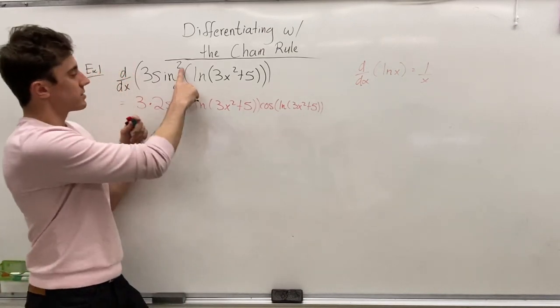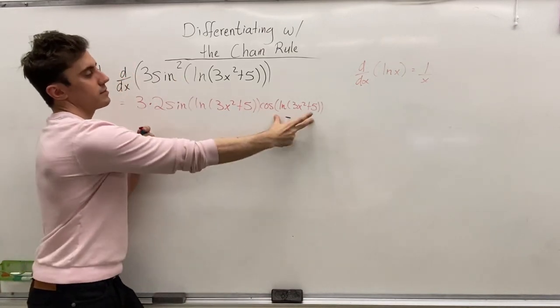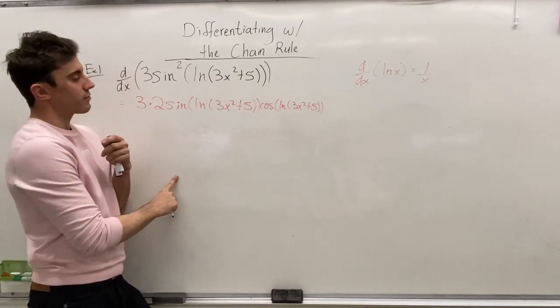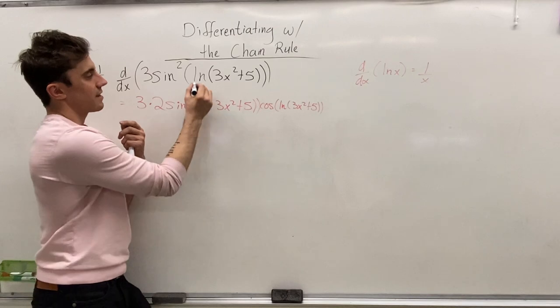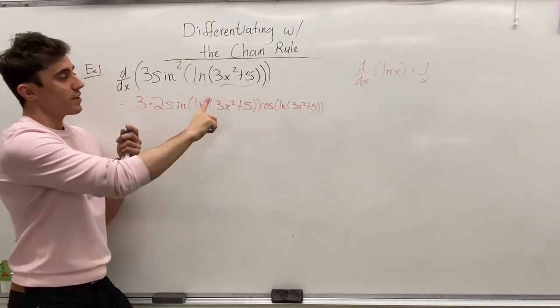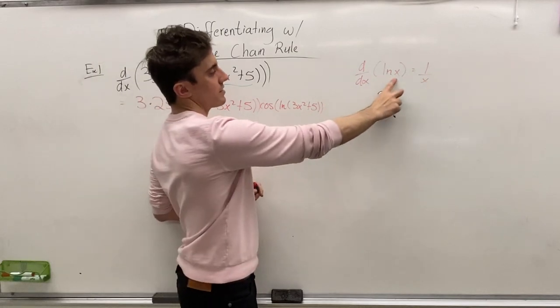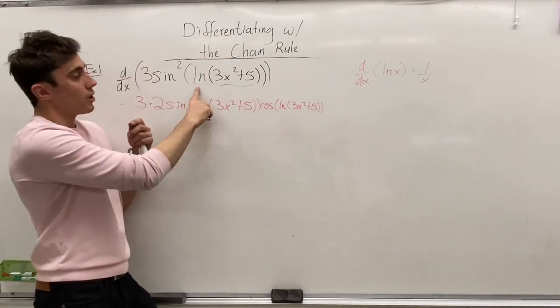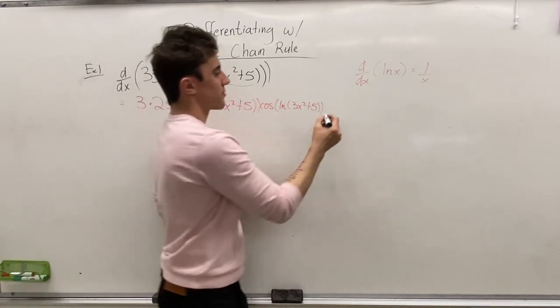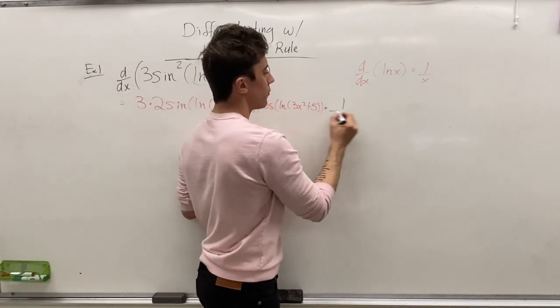So, now that we've differentiated through sine squared, through sine, giving us the cos part through the chain rule, now we're going to differentiate the stuff inside of the brackets. So, we're going to differentiate ln of 3x squared plus 5.